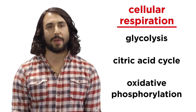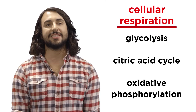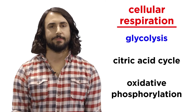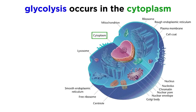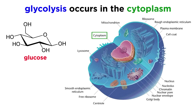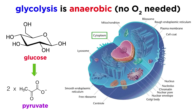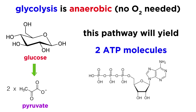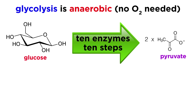Cellular respiration happens over three major pathways: glycolysis, the citric acid cycle, and oxidative phosphorylation. Let's focus on these one at a time. Glycolysis comes first, and it happens in the cytoplasm of the cell. This is the process by which glucose molecules are split into two pieces called pyruvate. This first pathway is actually anaerobic, meaning it does not require oxygen, so it is the most evolutionarily ancient metabolic pathway, occurring in even the simplest cells. In this pathway, one glucose molecule can yield a net of two ATPs. It requires ten enzymes to happen, which catalyze each of the ten steps, as well as an investment of two ATP molecules in the preparatory phase to get four ATPs back over several steps in the payoff phase.